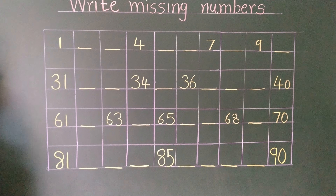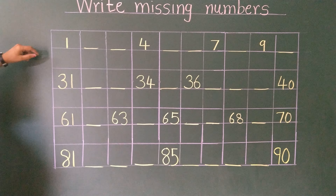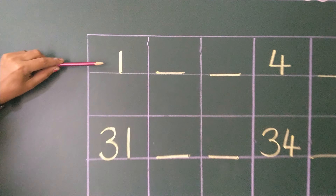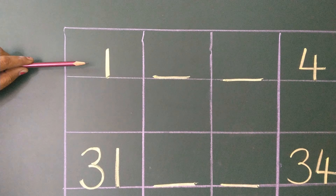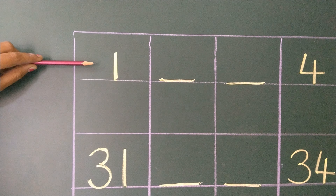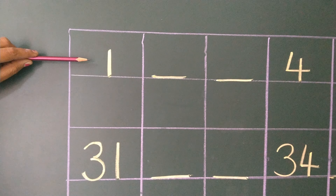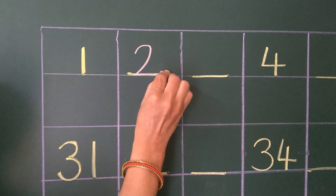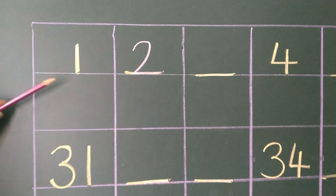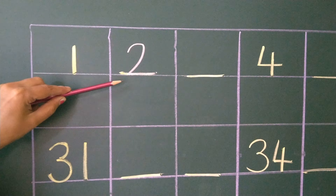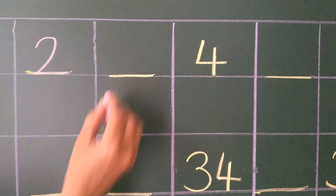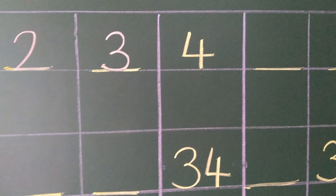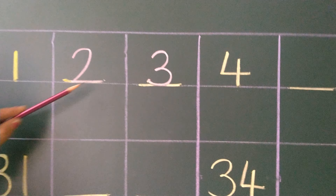See on the board, student, which number is this? Which number is this? Now number 1. After 1, which number comes? Number 2. So we have to write here number 2. 1, 2. After 2, which number comes? Number 3. 1, 2, 3.